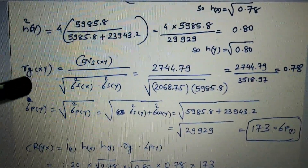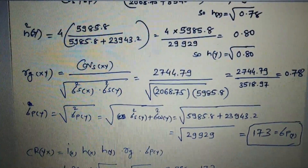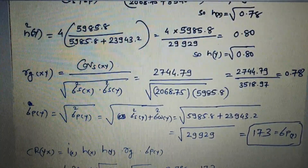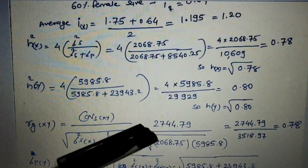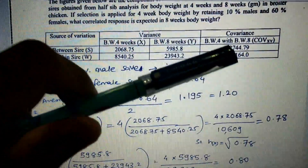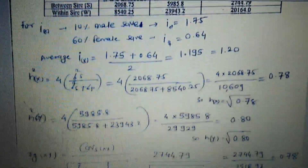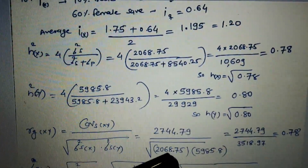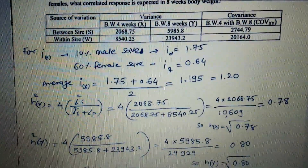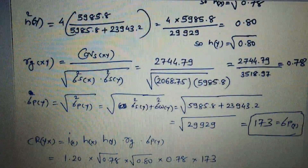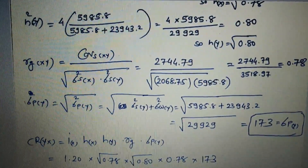For genetic correlation: rg = Covariance_Sxy divided by √(Variance_Sx × Variance_Sy). The covariance value is 2744.79; Variance_Sx is 2068 and Variance_Sy is also available. Solving this gives rg = 0.78, which is the genetic correlation between the X and Y traits.